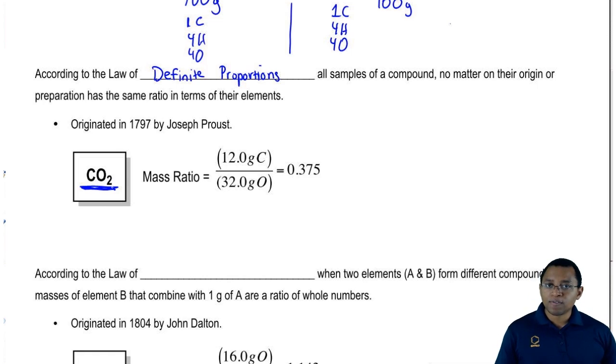It doesn't matter where the CO2 comes from. All that matters is both of them are CO2 and since they're both CO2, they'll both have the same mass ratio. Now, what exactly is this mass ratio?